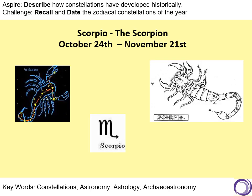We now move on to constellation number ten, which is Scorpio, also known as Scorpion — actually the oldest constellation. It was on the Babylonian star charts I showed you earlier, making it well over three and a half thousand years old. The story about Scorpio is quite simple: there was a hunter called Orion who boasted he would kill all the beasts on Earth. Gaia the Earth goddess decided that wasn't acceptable, so she sent Scorpio to kill Orion in a bid to stop all the other beasts from being killed. Scorpio dates from October 24th to November 21st.